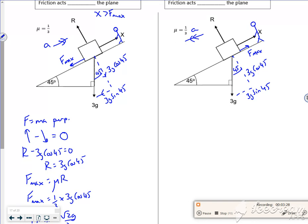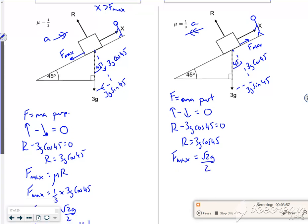Right, so let's have a look at F equals ma perpendicular. So up minus down is equal to zero. So that's going to be the same, isn't it? R minus 3g cos 45 is zero. R is 3g cos 45. Then my F max has to be the same, that's going to be root 2g over 2 because it's the same as whatever it was before.